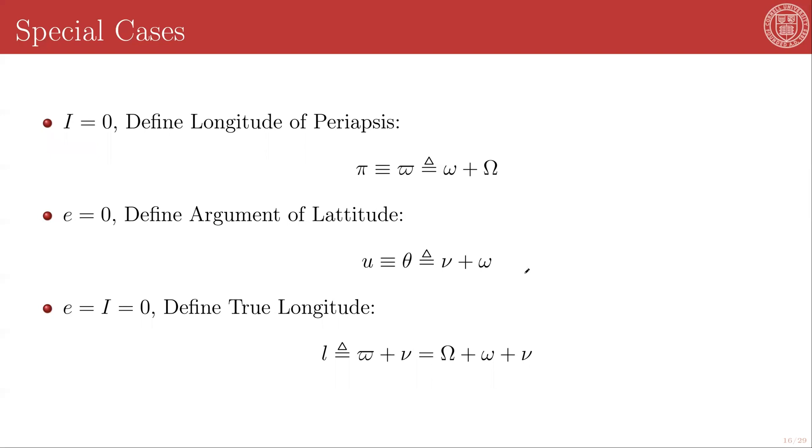There are some interesting special cases to consider. We noted that lowercase omega and capital omega were measured in two different planes, making omega plus capital omega a compound angle in cases where the inclination is non-zero. However, if the inclination is zero, we get a degeneracy.